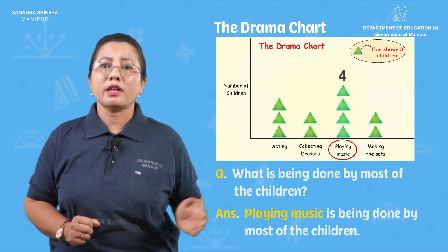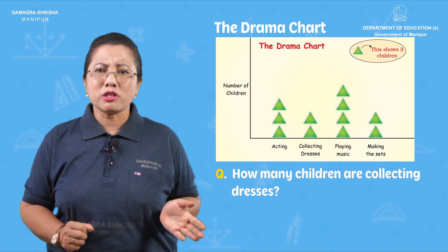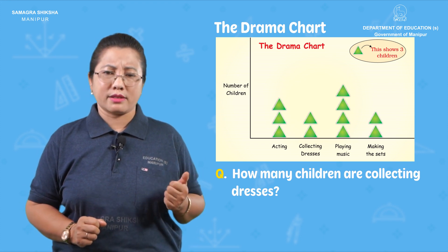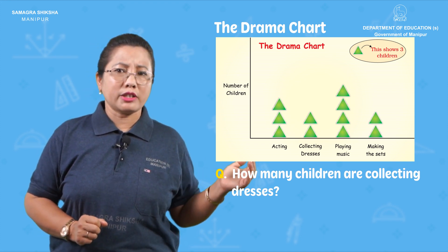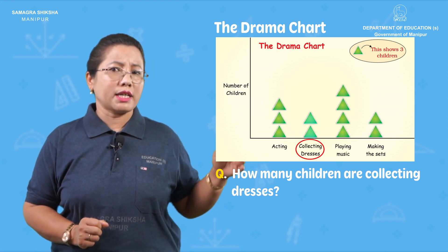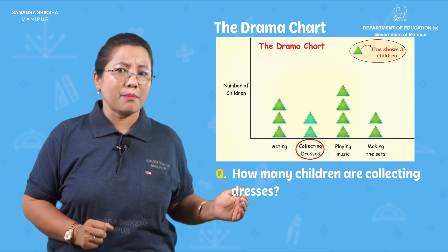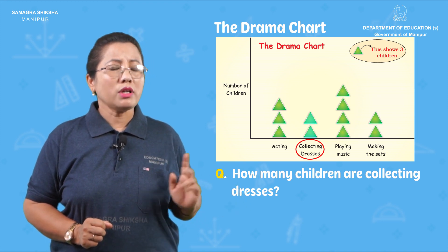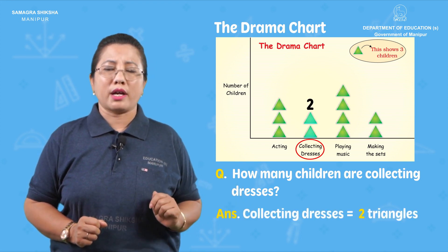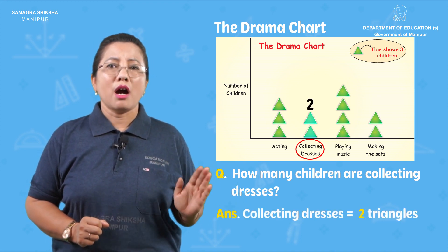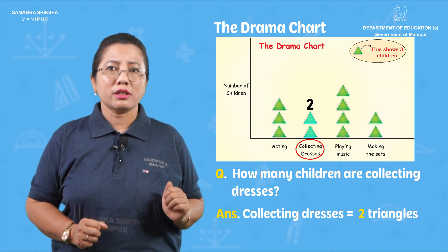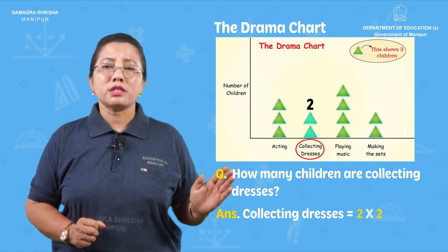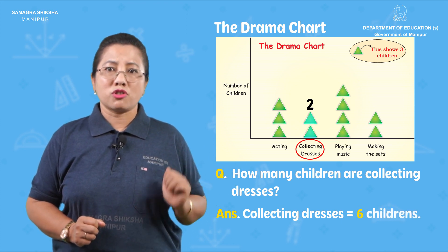Then, how many children are collecting dresses? There are two triangles for collecting dresses. How many children is that? Three into two, that is six children are collecting dresses.